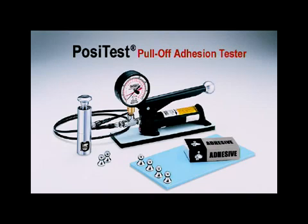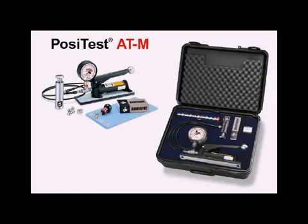Several PosiTest models are available for measuring coating adhesion on a variety of substrates. A 20 mm dolly available with the M model is ideal for measuring on metal substrates.